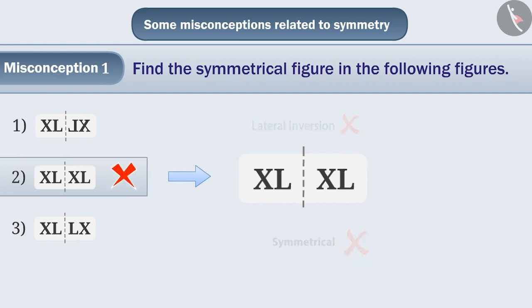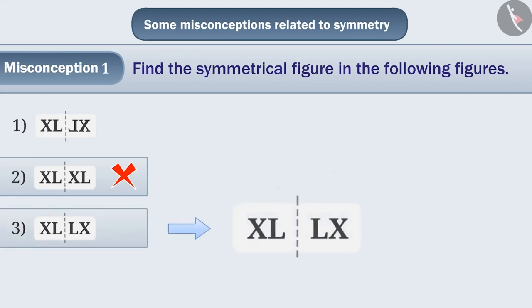Some children cannot understand the concept of symmetry properly. They think in option 3, the two parts are reflections of each other. That is why they select option 3. But this is also the wrong answer because even here, the lateral inversion is not properly represented.